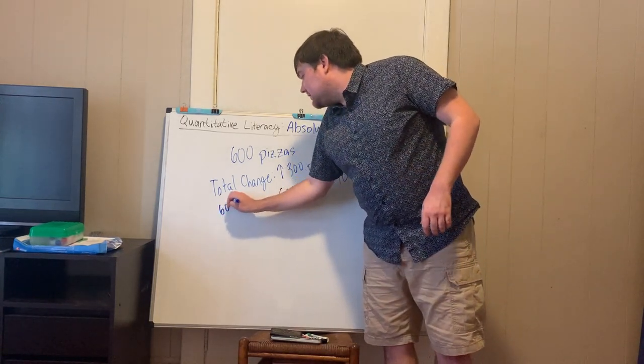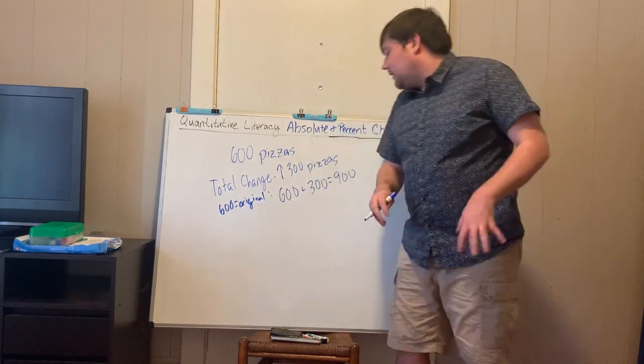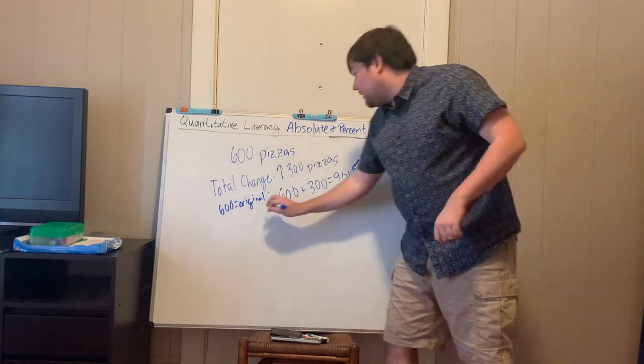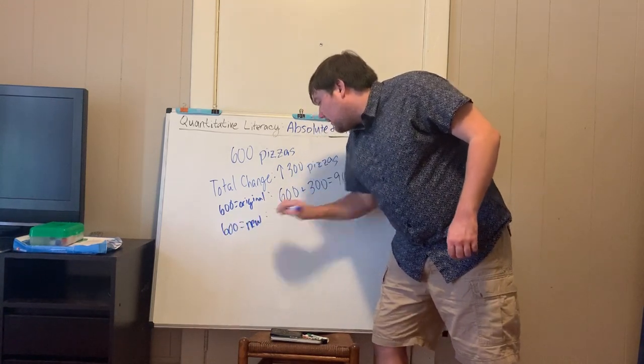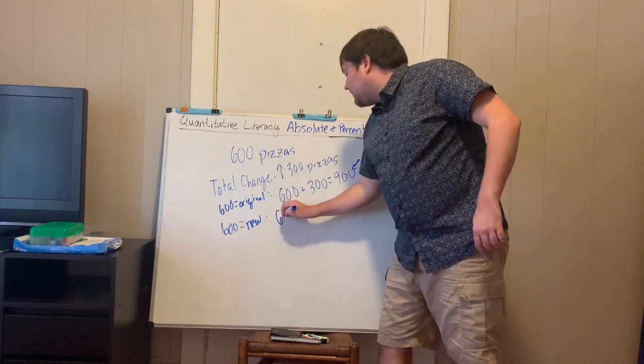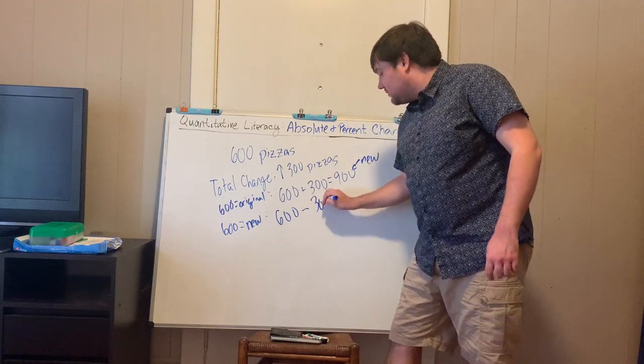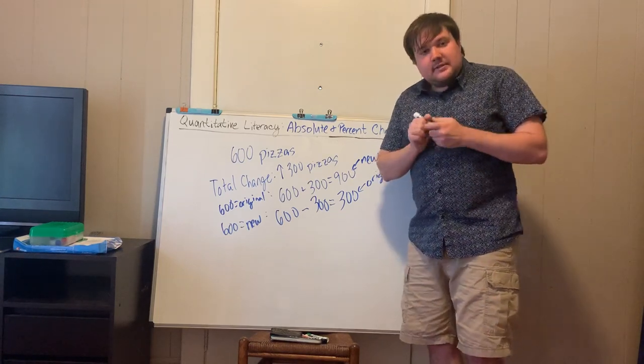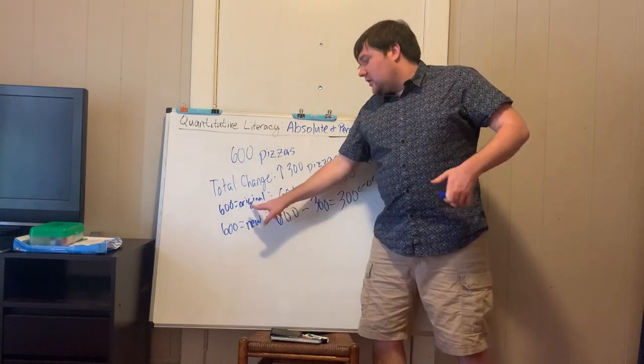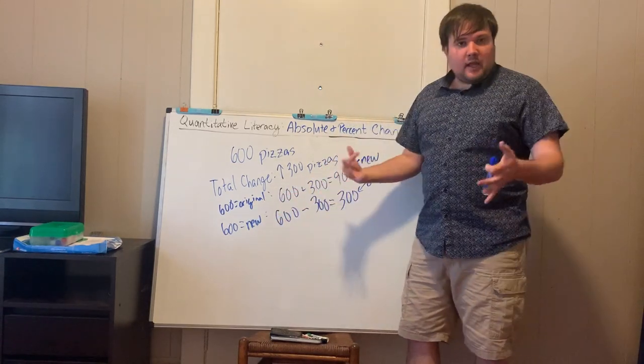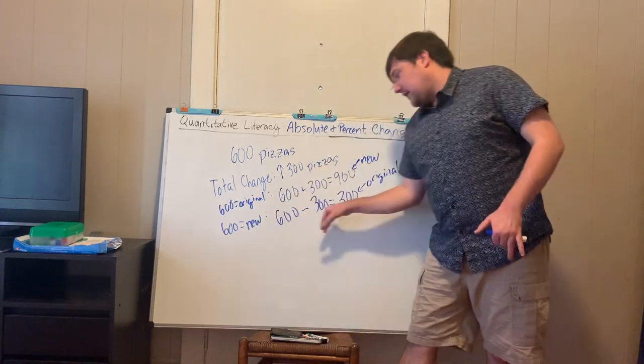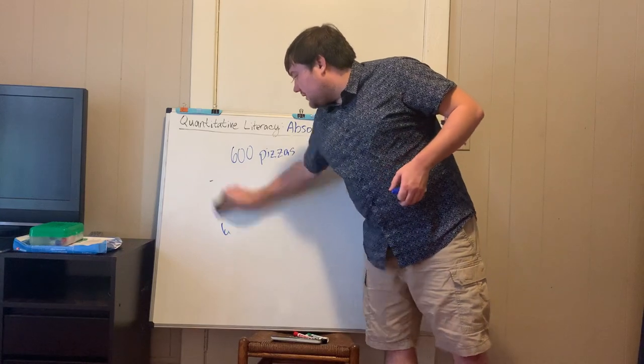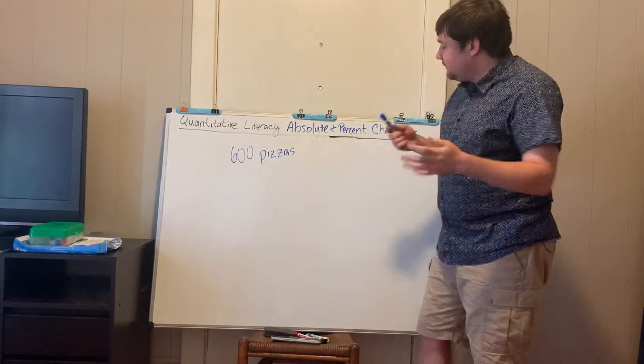Now let's suppose that we actually had a new value of 600 pizzas. In that case, if we wanted to find our original, we have to take our value and instead of adding, we subtract. And we get that our original value would be 300. So always come at it from the guise of, if this is our change, if we have our original, we add it, if it is our new value, or given our new value on the total change, we have to subtract. We undo what that change is.